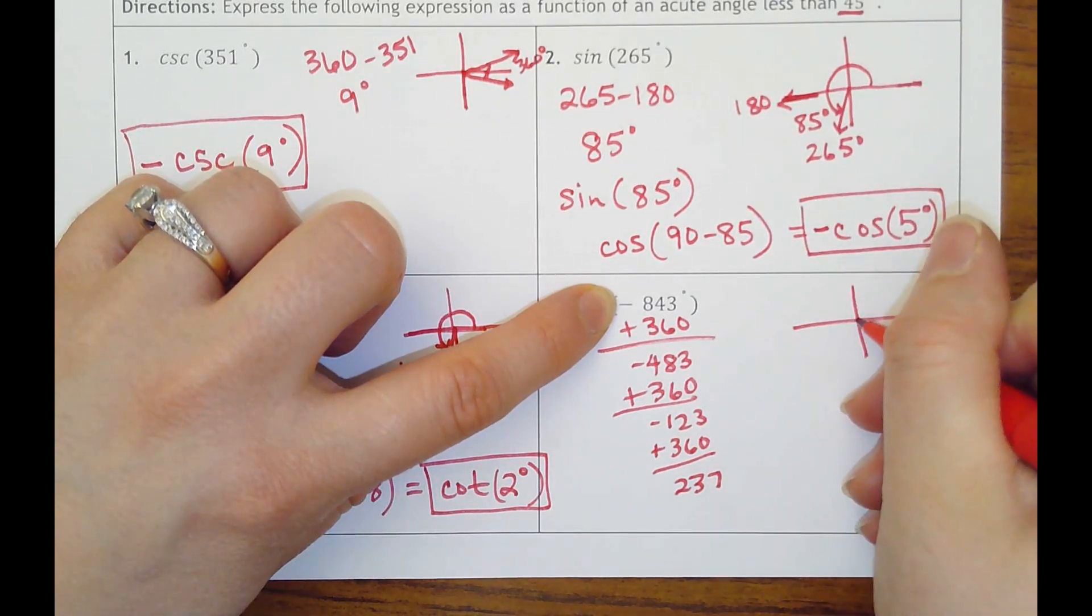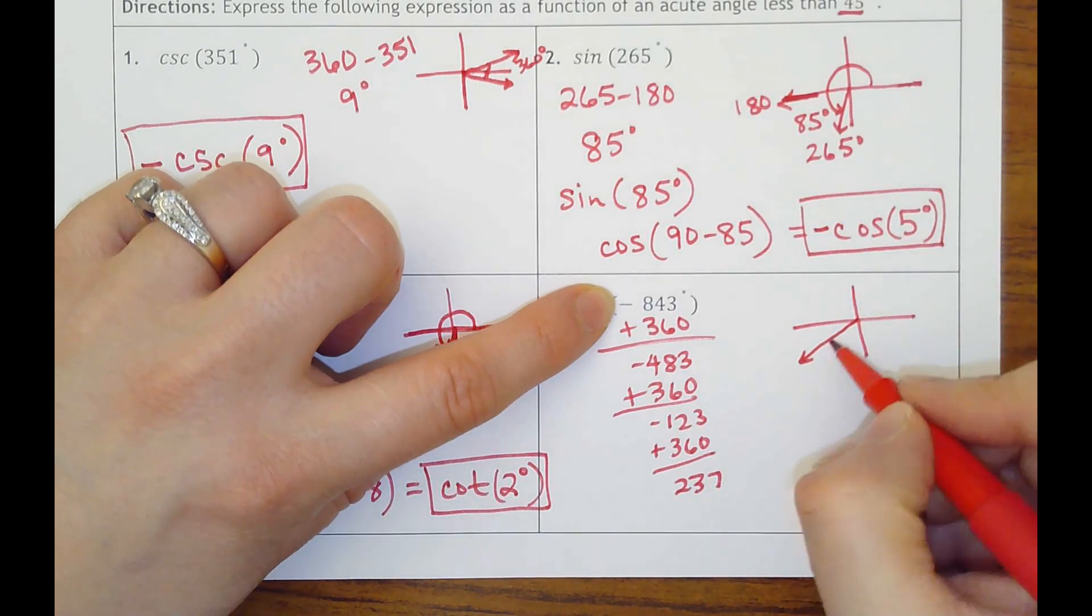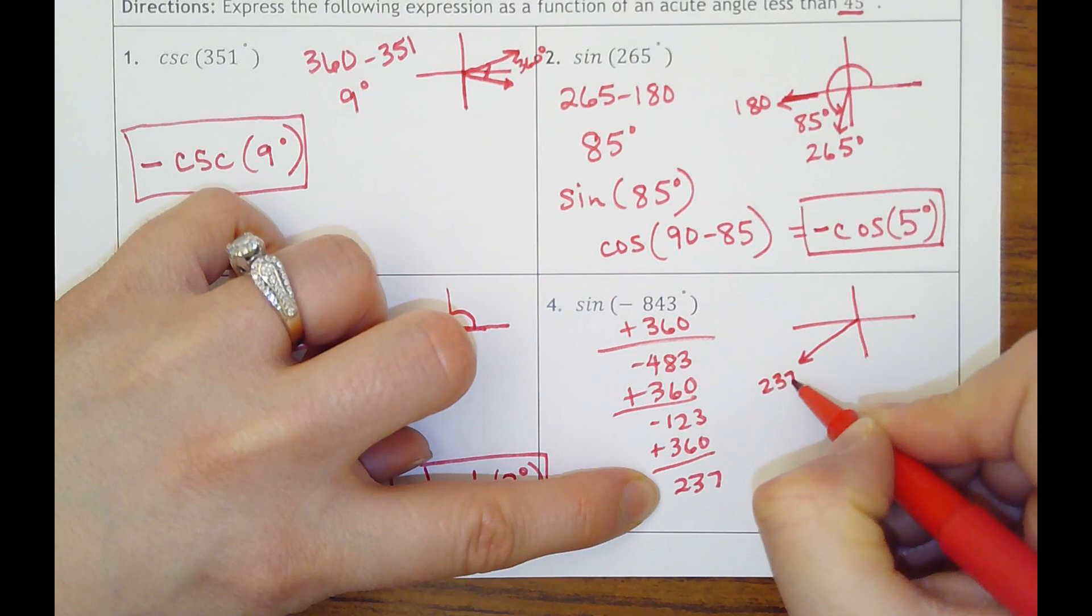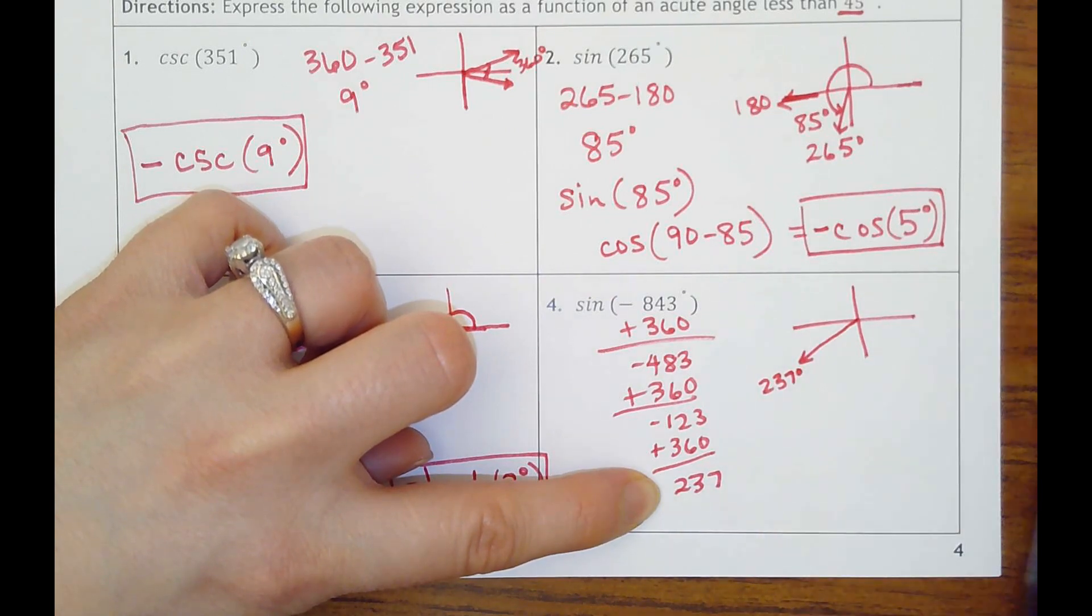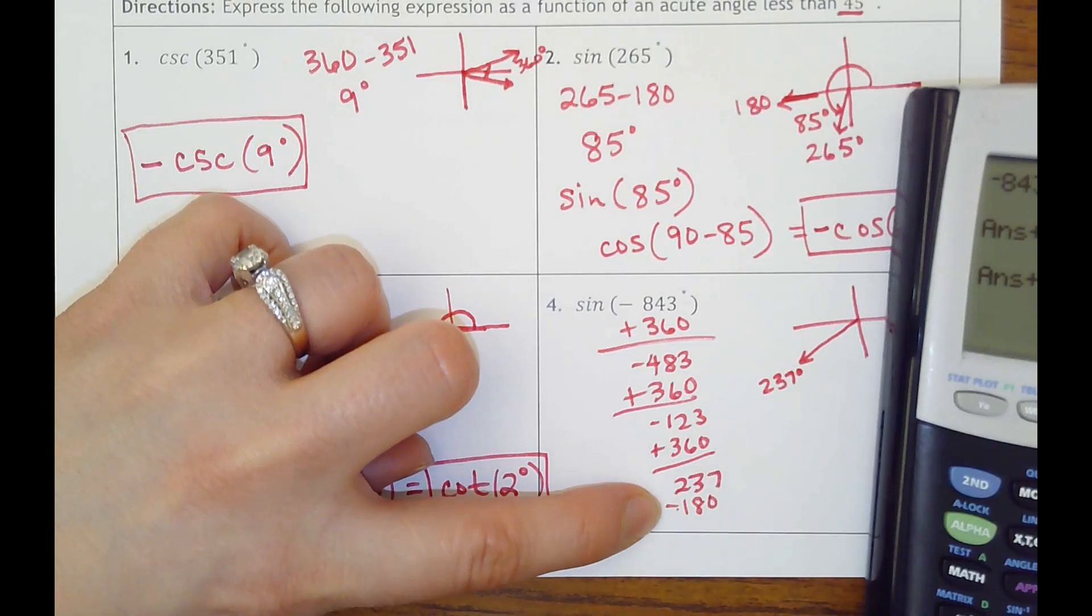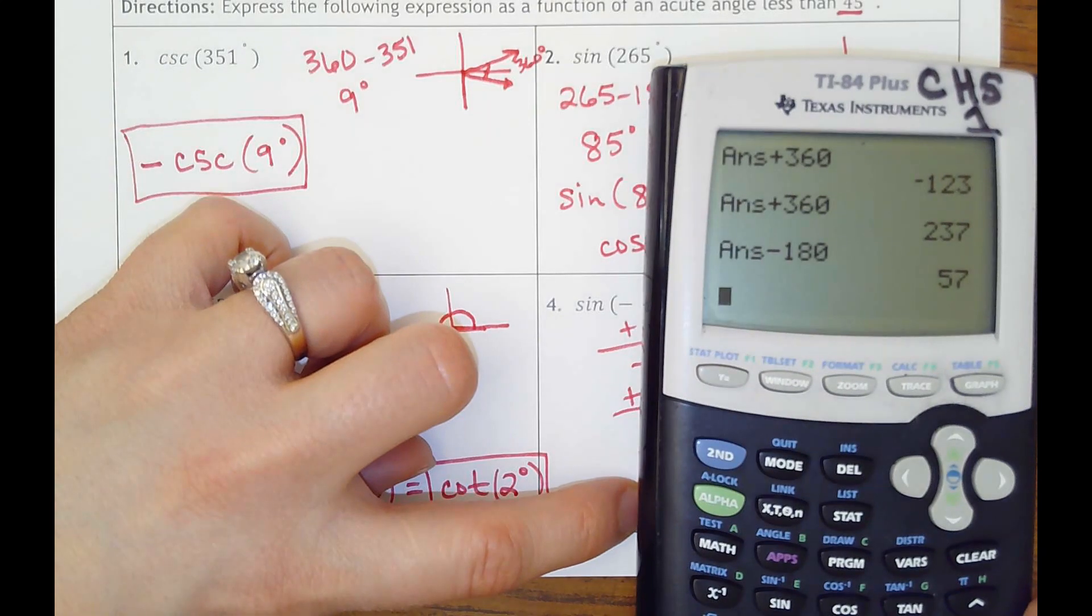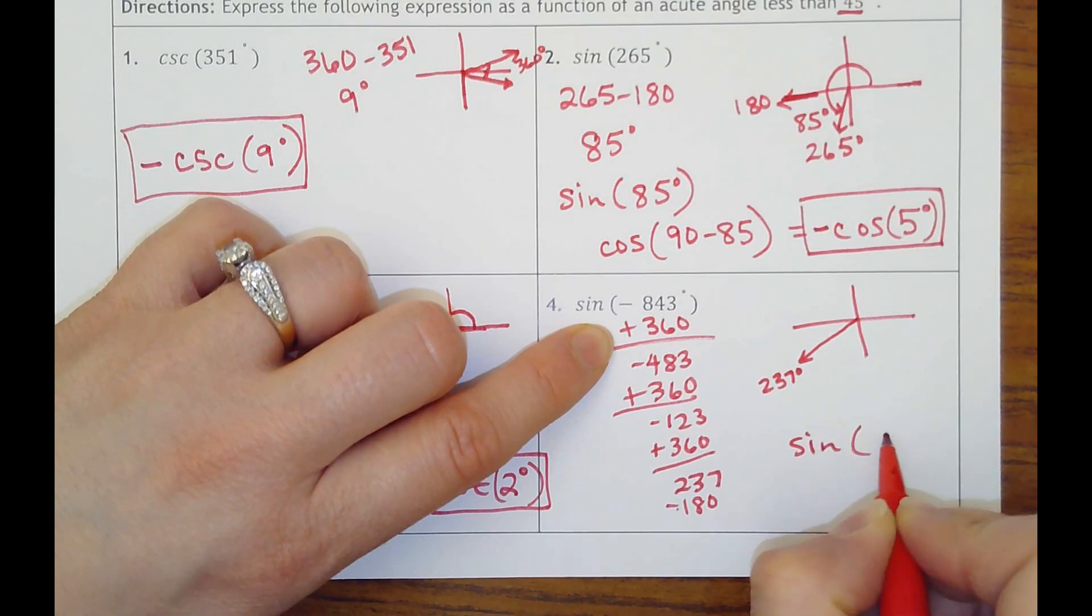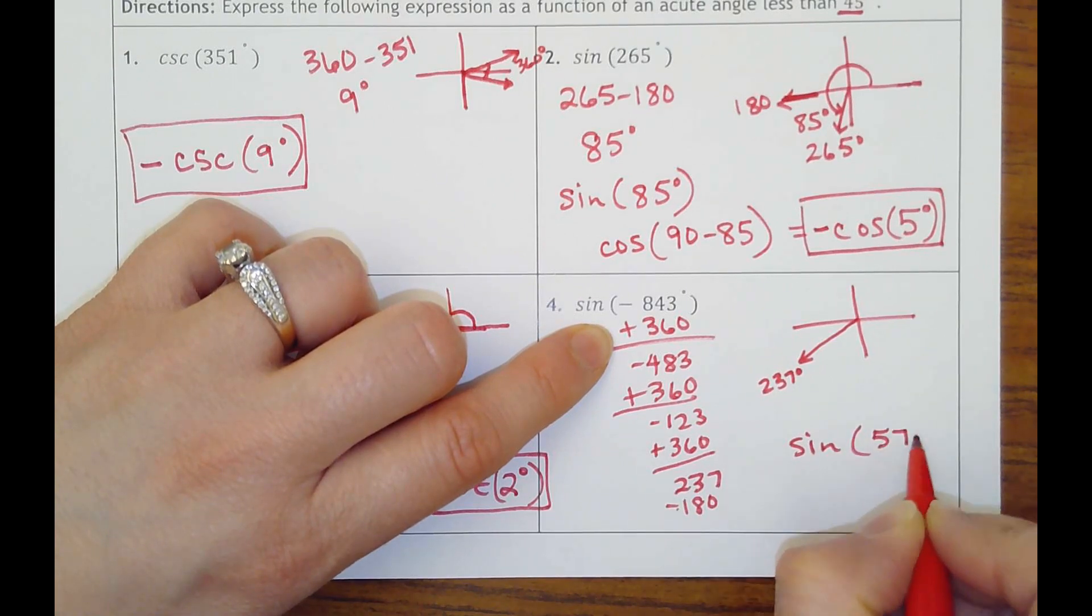So that would be in here somewhere. Then I would figure out what my reference angle is. So I would do 237 minus 180. And that gets me, oh, I'm sorry, my calculator's not even on the screen. That would give me 57. And so really this is the same thing as sine of 57.